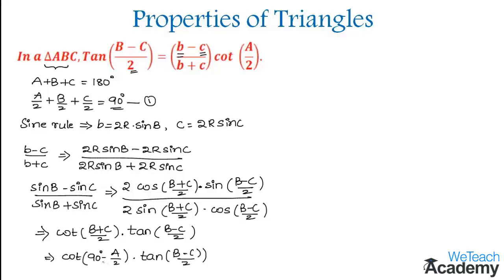Cot 90 degrees minus theta equals tan theta. Using that concept, the value of B minus C divided by B plus C would be equal to tan A by 2 times tan B minus C by 2.